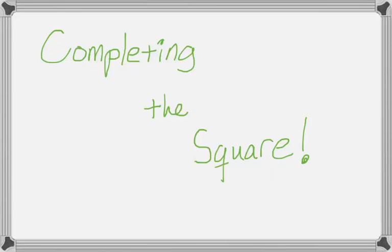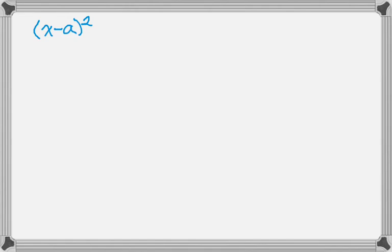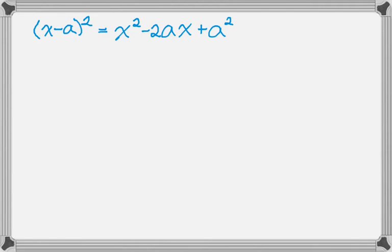This video is going to be about completing the square, which is an important topic. We'll start by working backwards. If we have a binomial that we want to square, we get the first thing squared, then negative a times x doubled — so negative 2ax — and then the square of the last, so plus a squared.